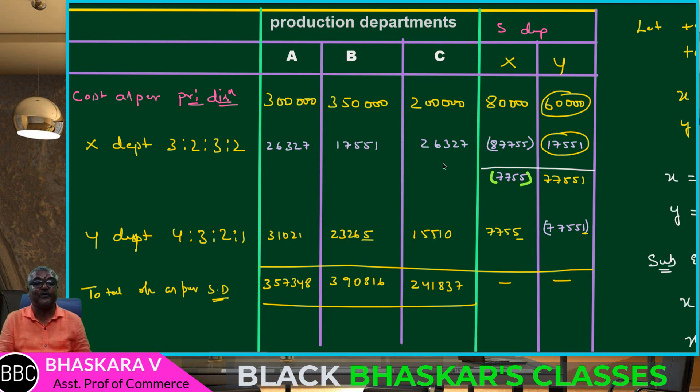Here is the shortcut to verify: the total as per secondary distribution should equal the total primary distribution. The grand total confirms the figures are correct.